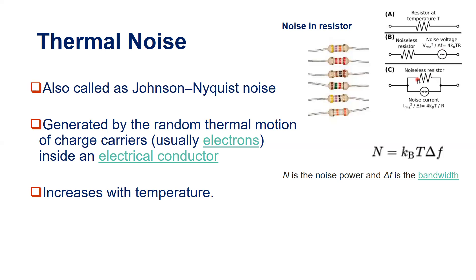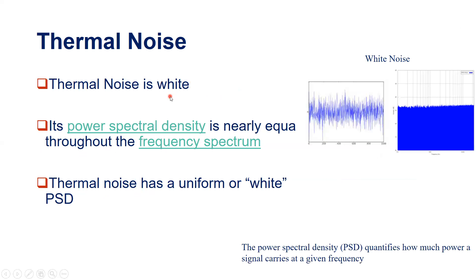Similarly, you can represent the noise as a current source. Model the resistor as a noiseless resistor with a noise current source in parallel. The value of the noise current source is given by I_rms² / Δf = 4·k_B·T / R, so I_rms = √(4·k_B·T·Δf / R). This is how you can model thermal noise — we will now look at an example.